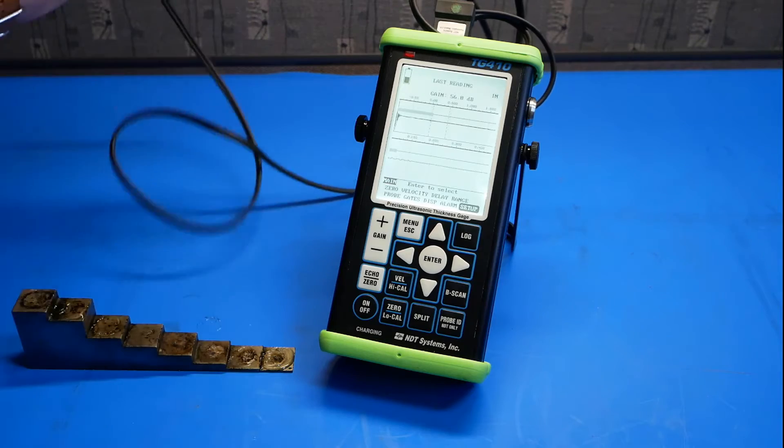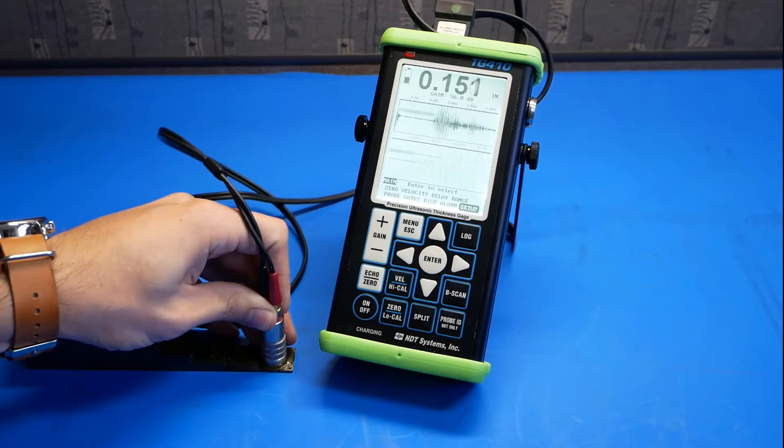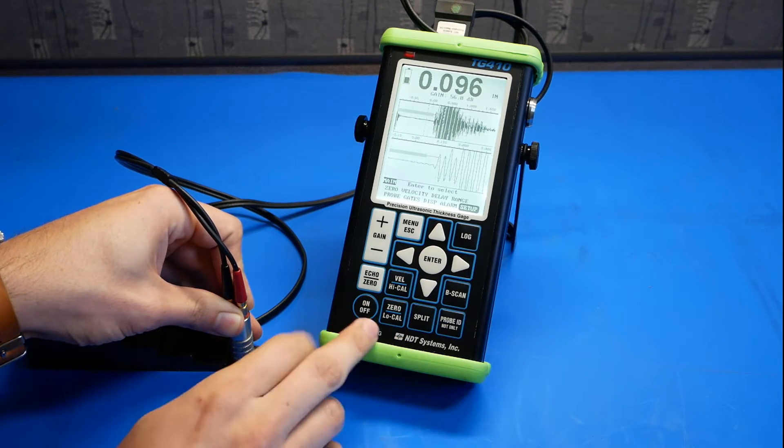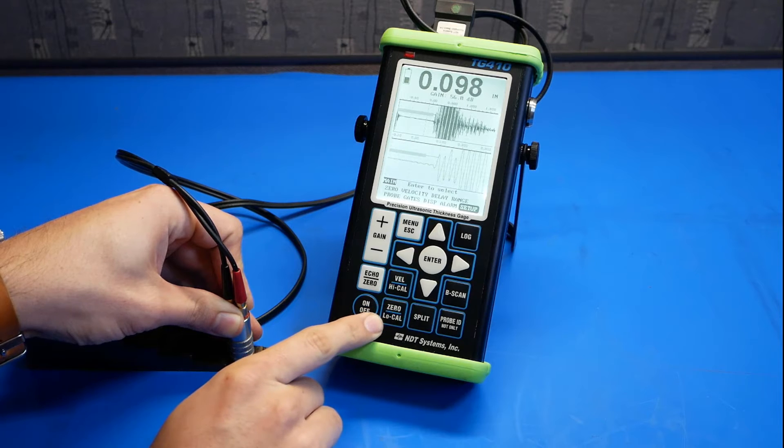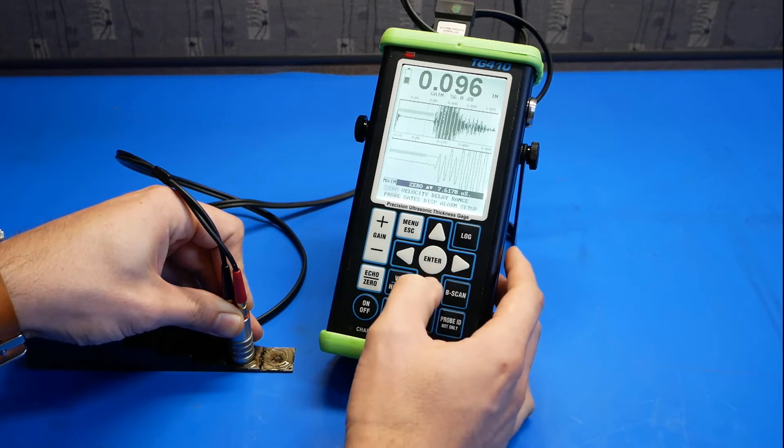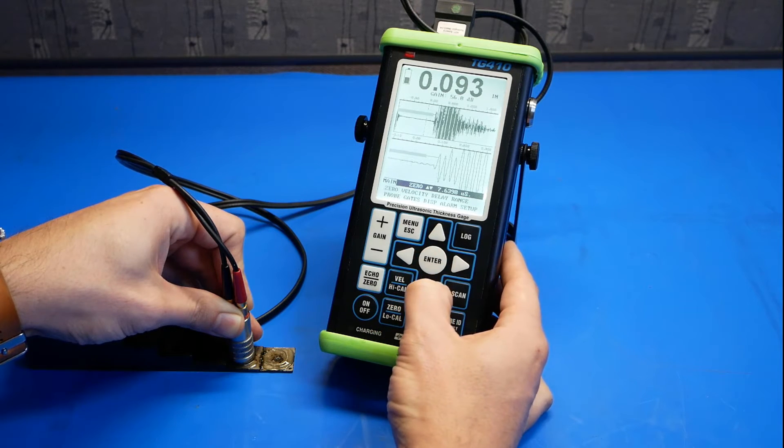Go ahead and couple your probe to the thinnest section that you're going to be measuring. In this case, it's 0.1 inches for me. Go to the zero or locale button on the keypad. Push enter, and we'll adjust the zero until the reading on the screen matches our gauge reading.